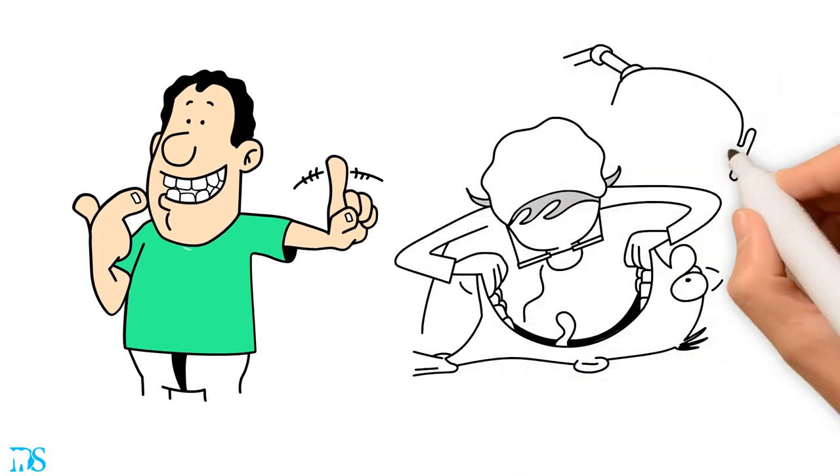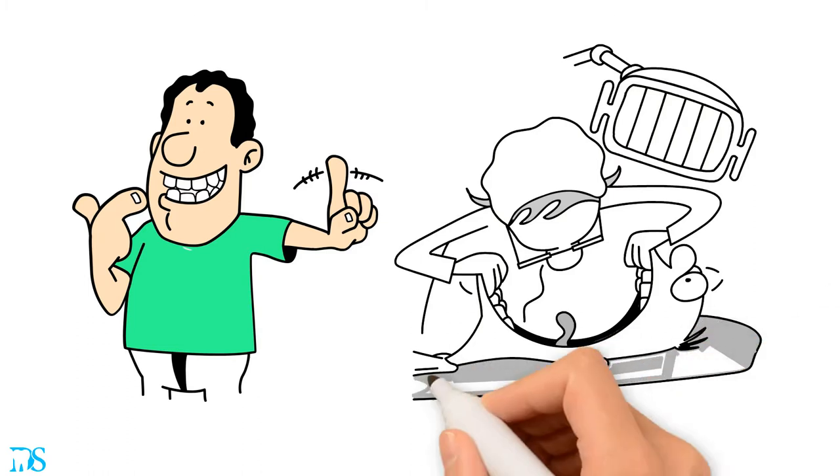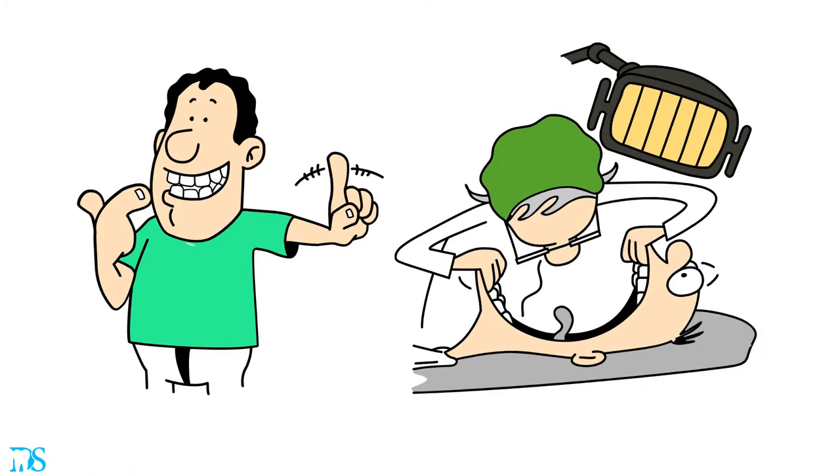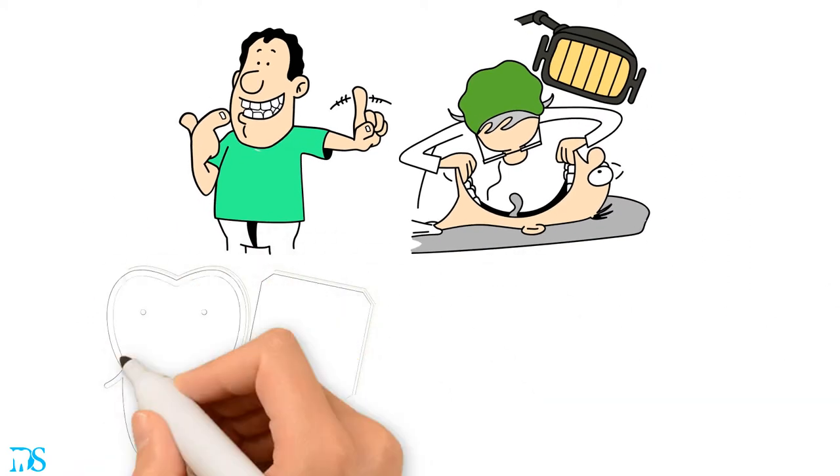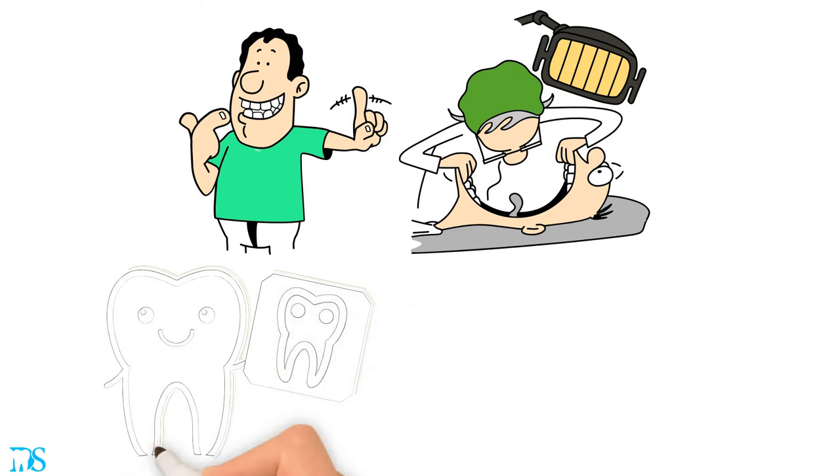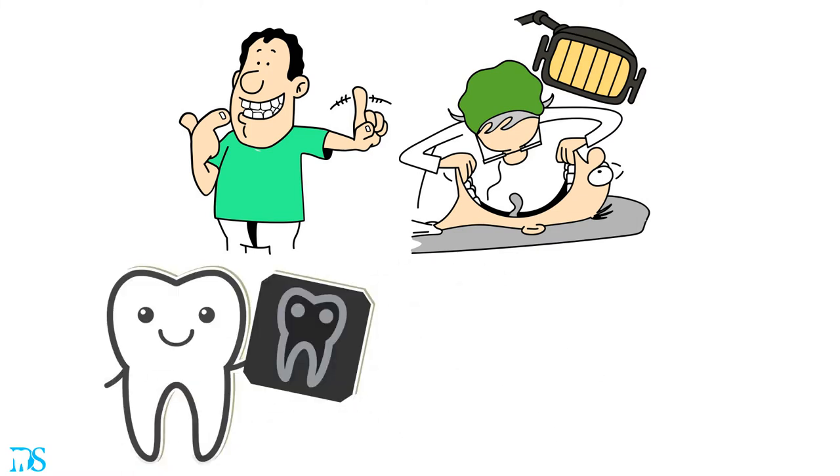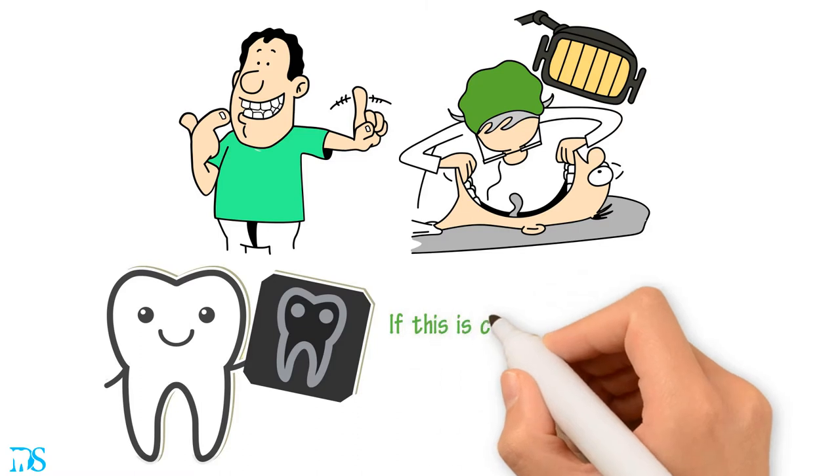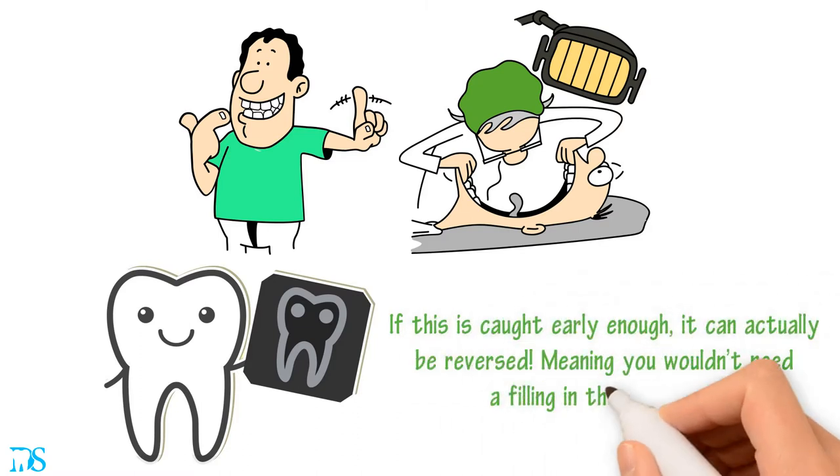Sometimes dentists like to watch a tooth over time - not because there's a cavity, but because it looks suspicious. This can happen for a couple different reasons. For example, an x-ray can show that a cavity is forming, but it doesn't really need a filling yet. If this is caught early enough, it can actually be reversed, meaning you wouldn't need a filling in the first place.